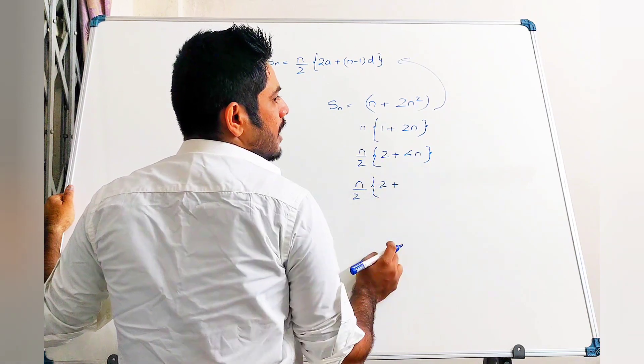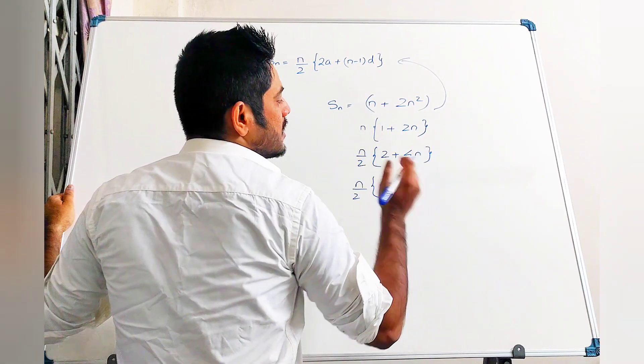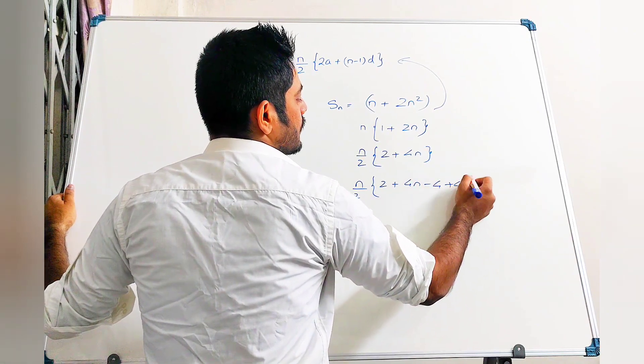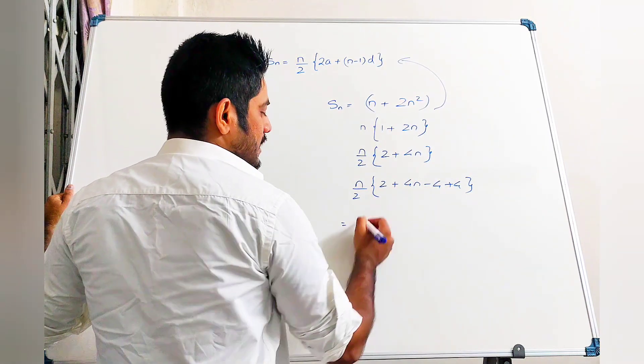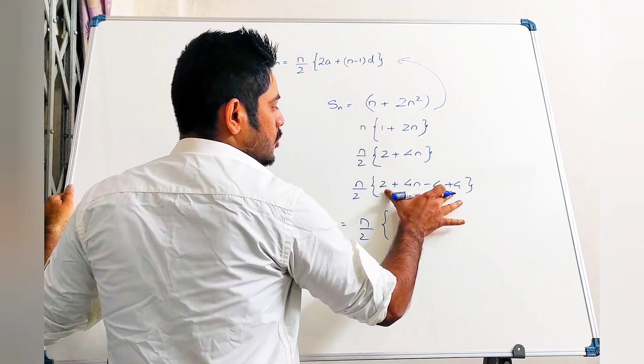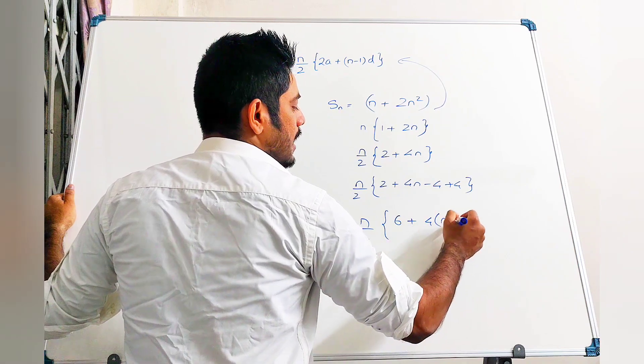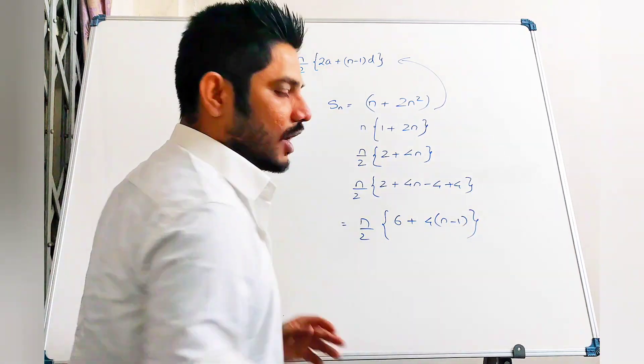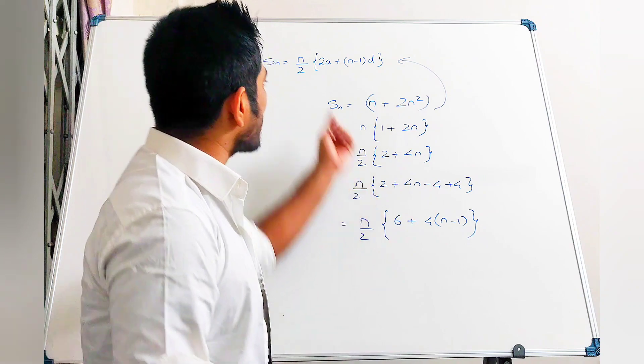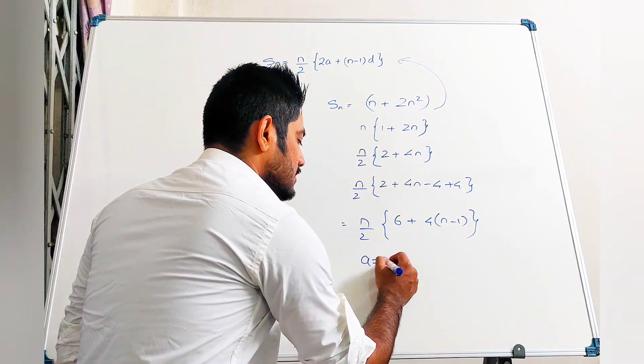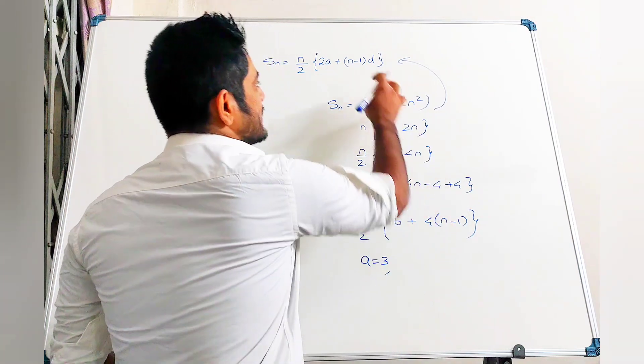I need this as 4n but n minus 1, so what I'll do is I'll add and subtract 4, which gives me n by 2 times 2 plus 4, 6 plus 4 common n minus 1. Now if you see this is exactly in this format wherein a is equal to 3 and d is equal to 4.